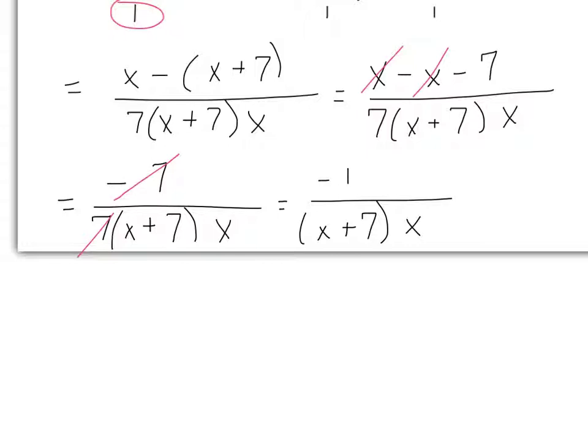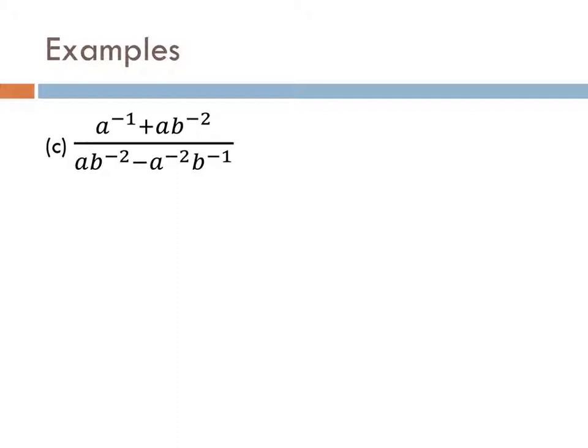Monomials are polynomials with a single term — mono meaning one. A one-term polynomial is a monomial. A polynomial with two terms is a binomial — bi for two. A three-term polynomial is a trinomial — tri for three. After that, we just call them polynomials. What we're looking at now is any polynomial divided by a monomial — divided by a single term. If you're dividing by more than a single term, you can't apply this method; that's why we'll have long division.